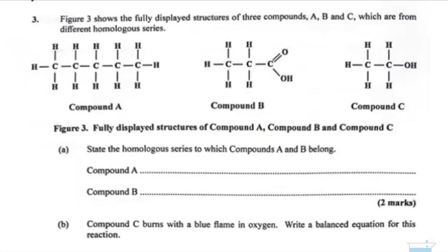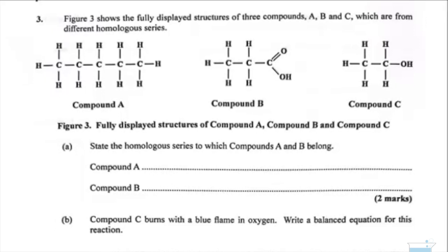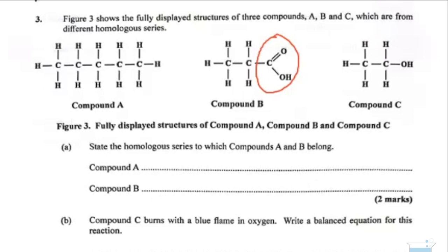Figure 3 shows the fully displayed structures of three compounds A, B, and C, which are from different homologous series. Let's examine compound A. This looks like a saturated hydrocarbon with only carbon-carbon single bonds and carbon-hydrogen single bonds. In compound B, we have a functional group, the C double bond O, OH. And in compound C, we have the OH functional group.